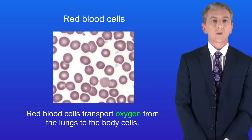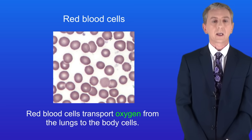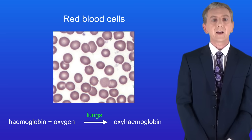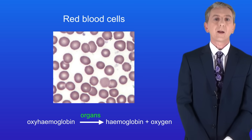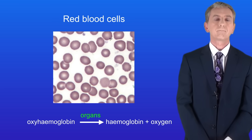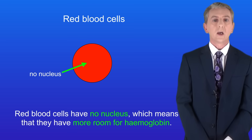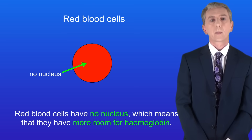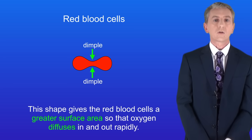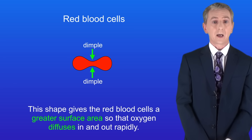Red blood cells transport oxygen from the lungs to the body cells, and to do this they've got three adaptations. Firstly, red blood cells contain the oxygen-carrying molecule haemoglobin. Haemoglobin combines with oxygen in the lungs forming the molecule oxyhaemoglobin. The red blood cells then travel to the organs where the oxyhaemoglobin releases the oxygen. Secondly, red blood cells have no nucleus, which means they've got more room for haemoglobin. Lastly, red blood cells have a biconcave disc shape — with dimples in the centre — giving them a greater surface area so oxygen diffuses in and out rapidly.